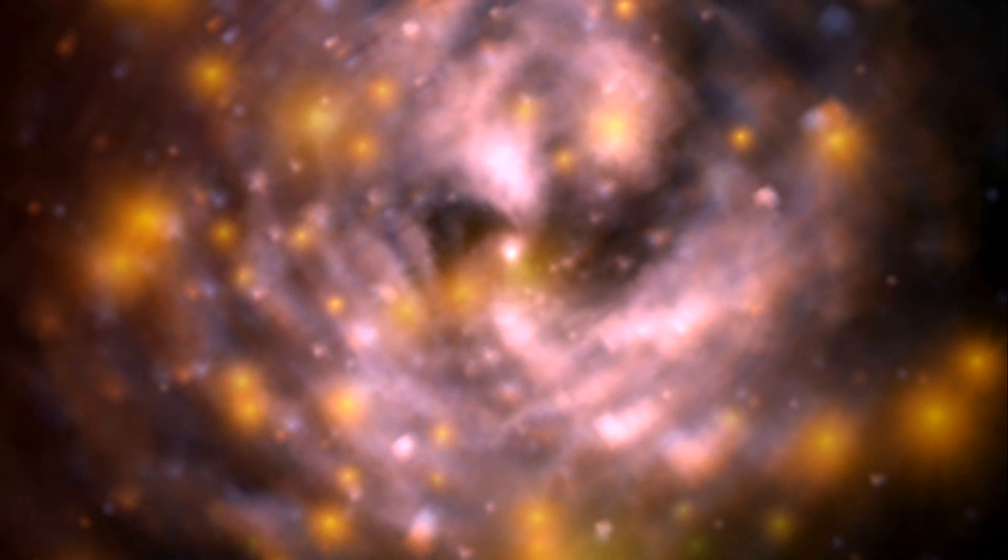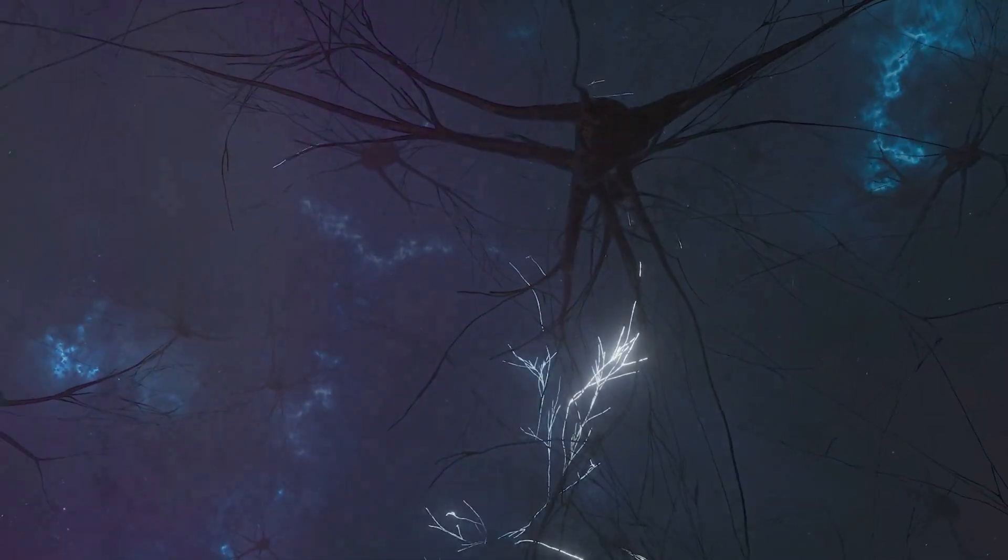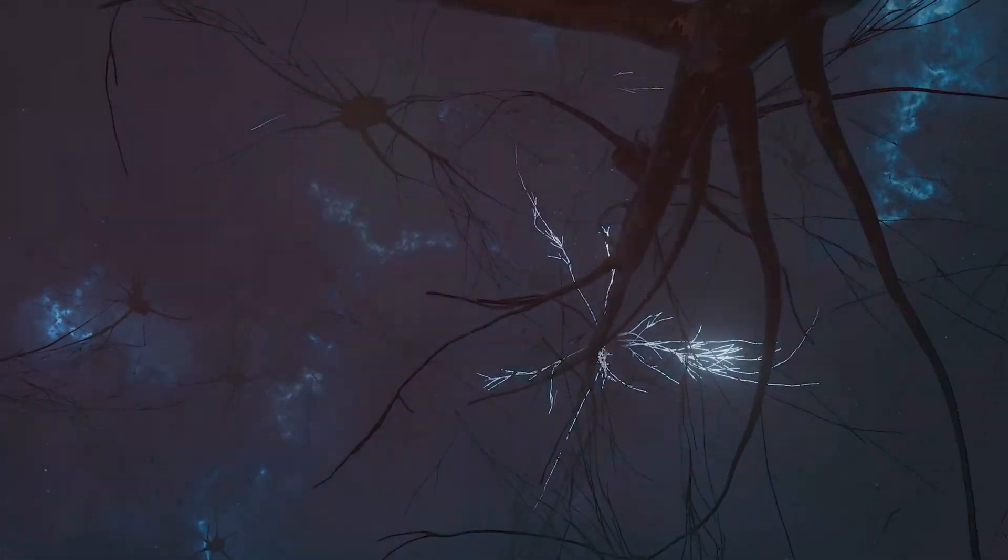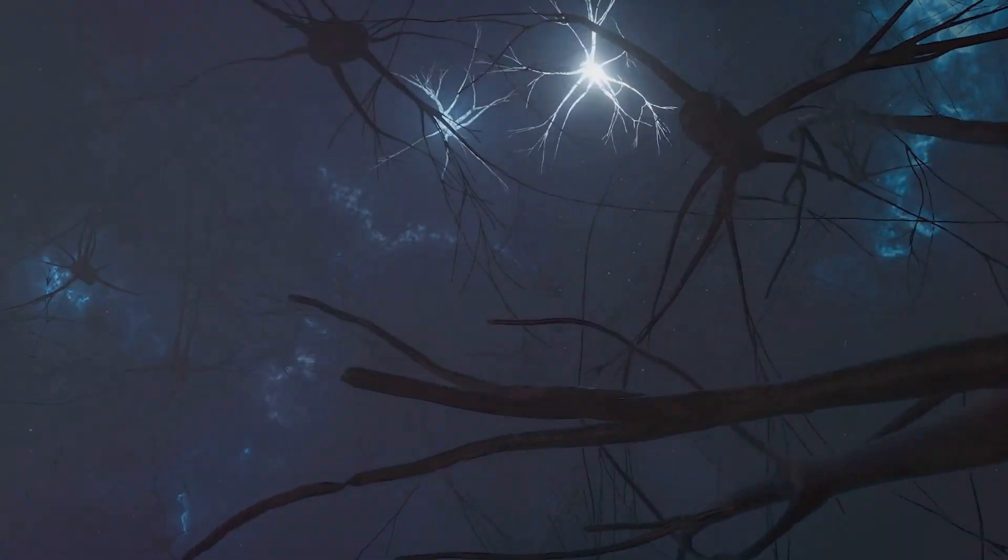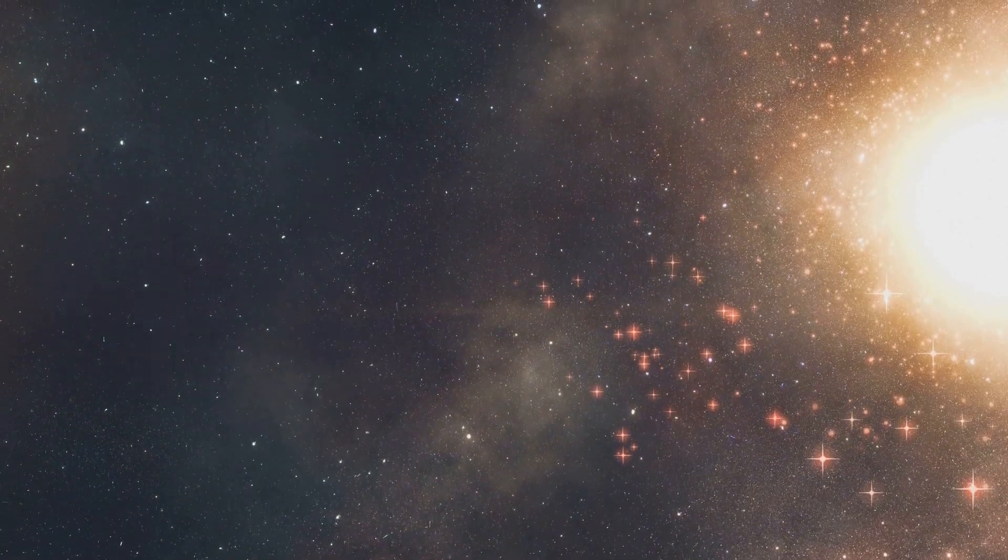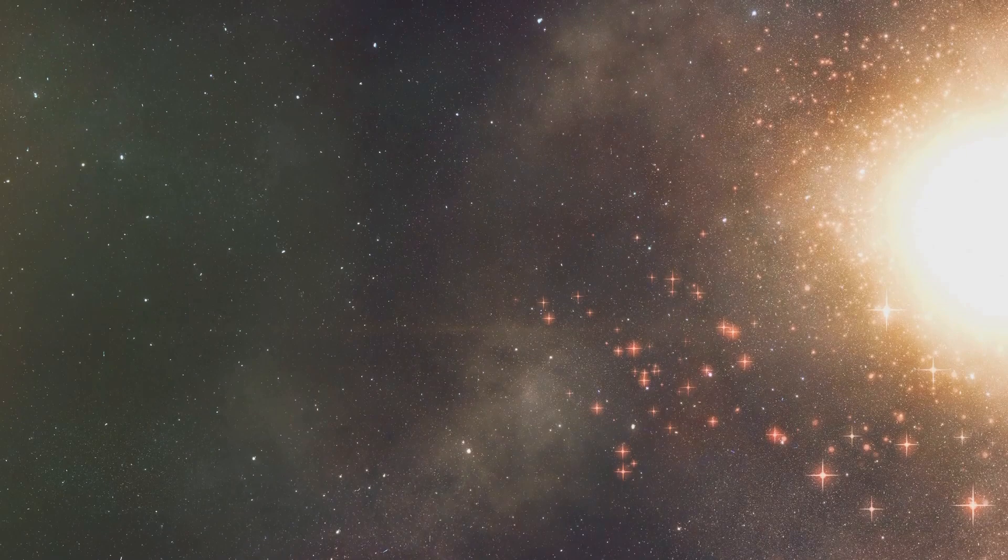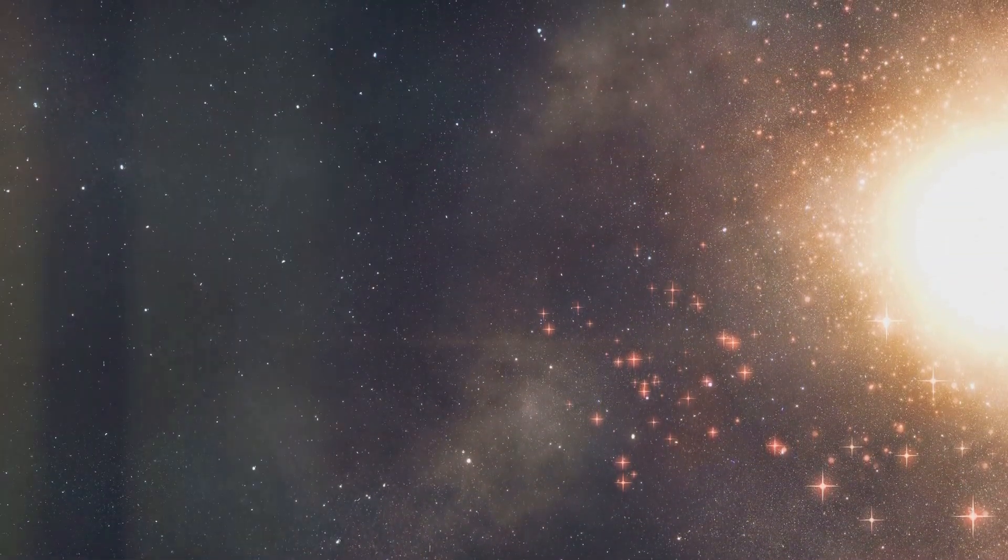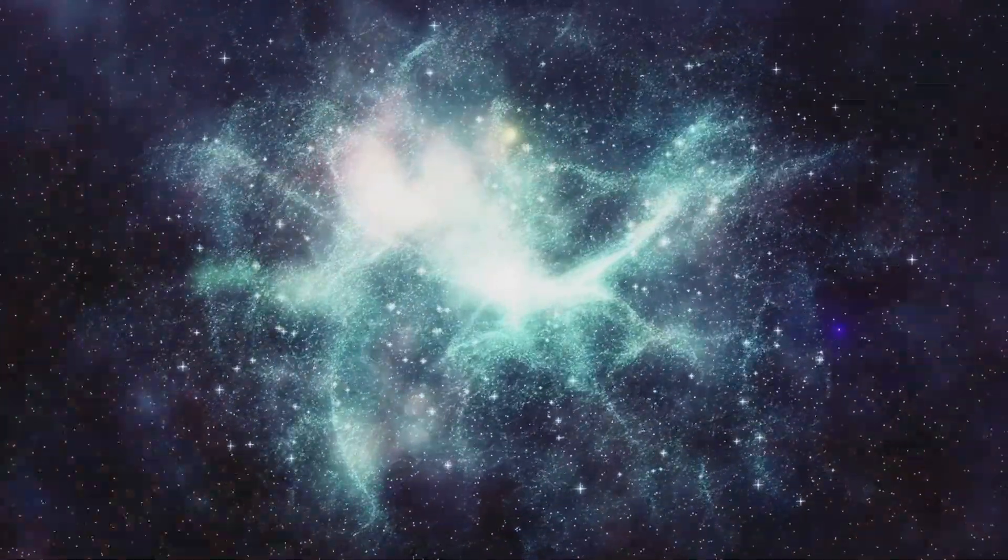So, what's going on here? Some researchers suggest that these anomalies indicate a connection between our collective consciousness and physical reality. The idea is that when our thoughts and emotions align on a grand scale, they can influence the behavior of these random systems.